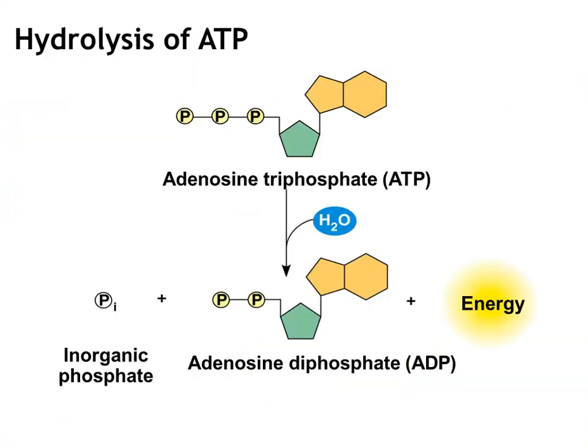Here's a more pictorial view of the hydrolysis process. Losing a phosphate — the phosphate itself is not the source of energy, but the molecule formed when it goes from ATP to ADP has less free energy. ADP has less free energy than ATP, and so that energy has to be released.